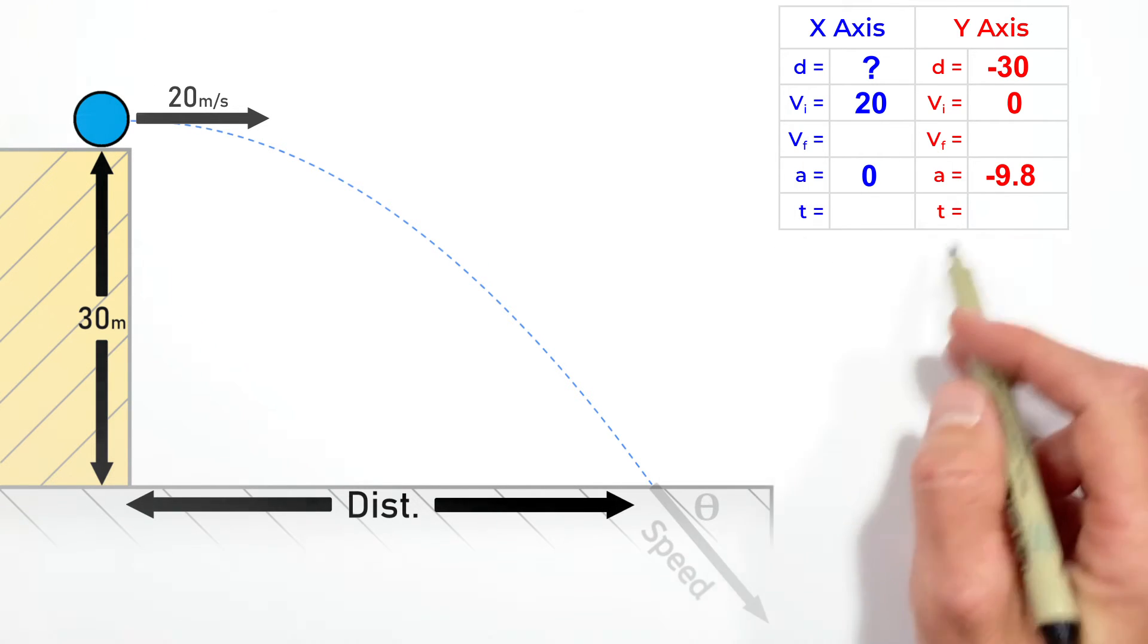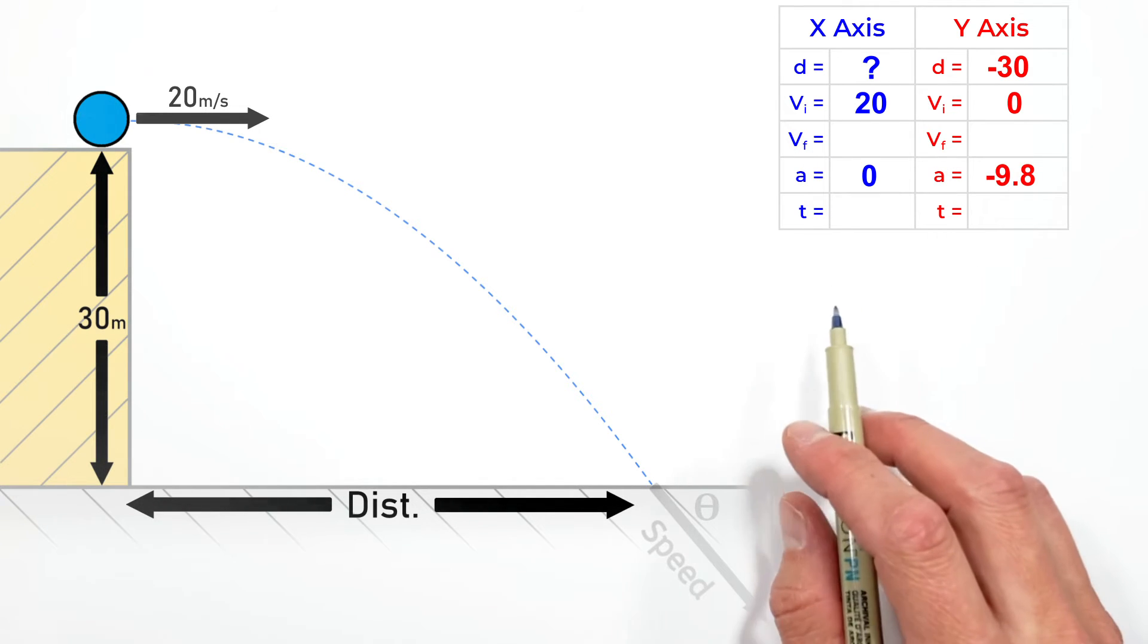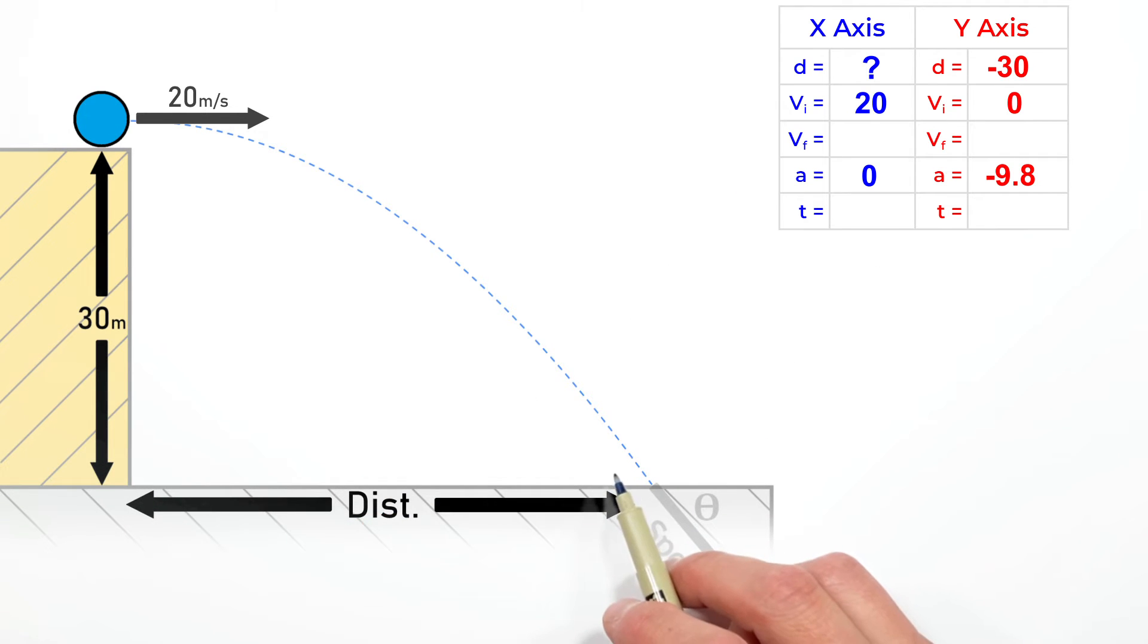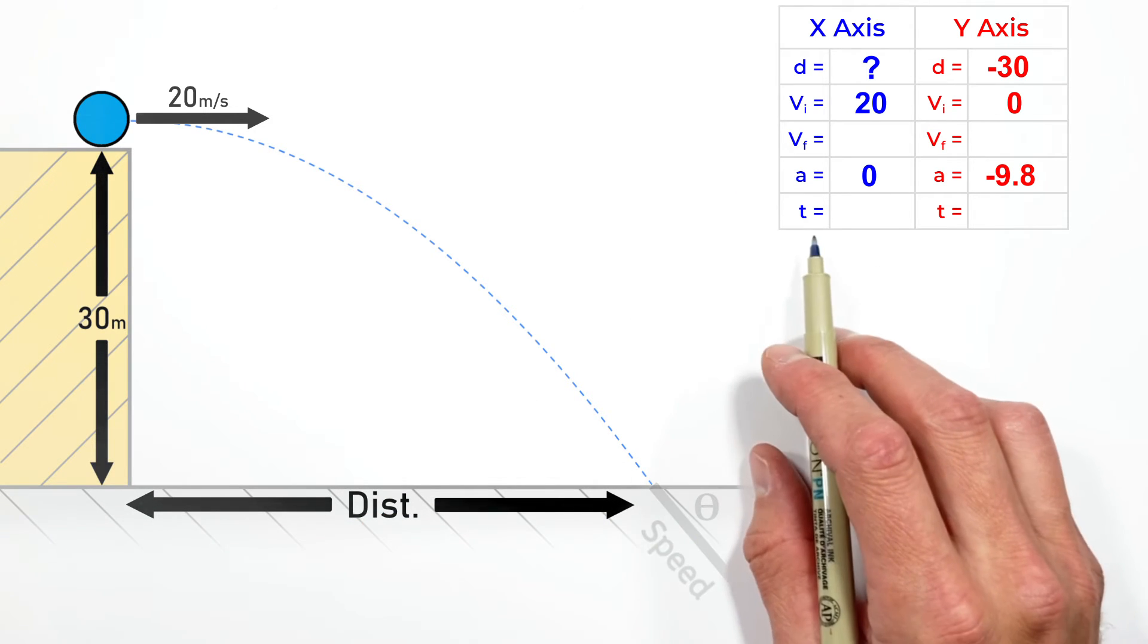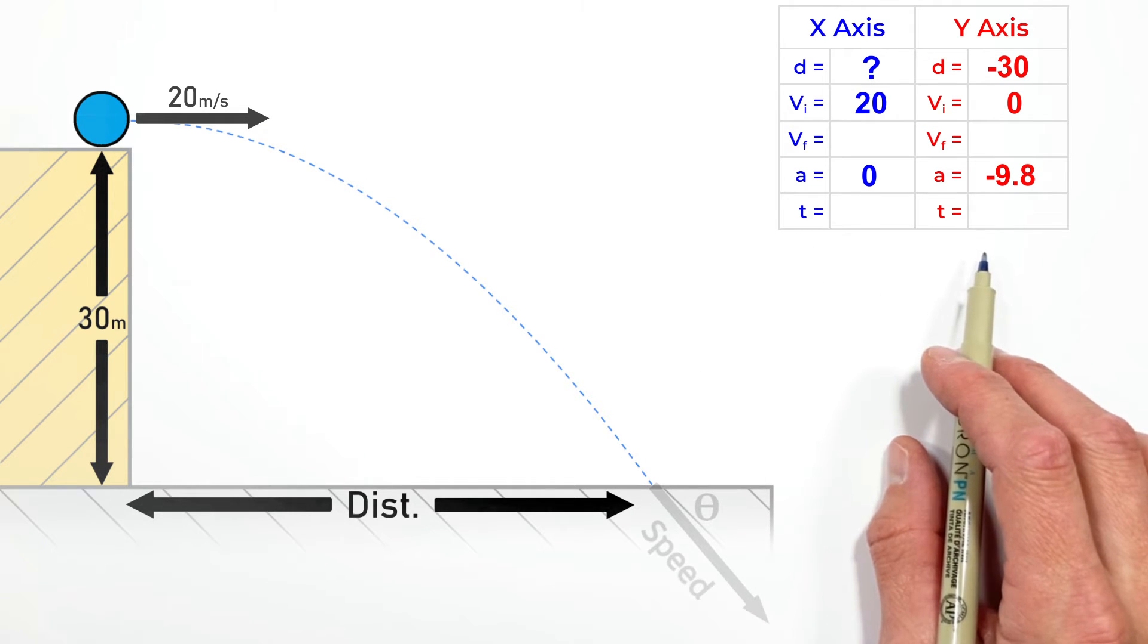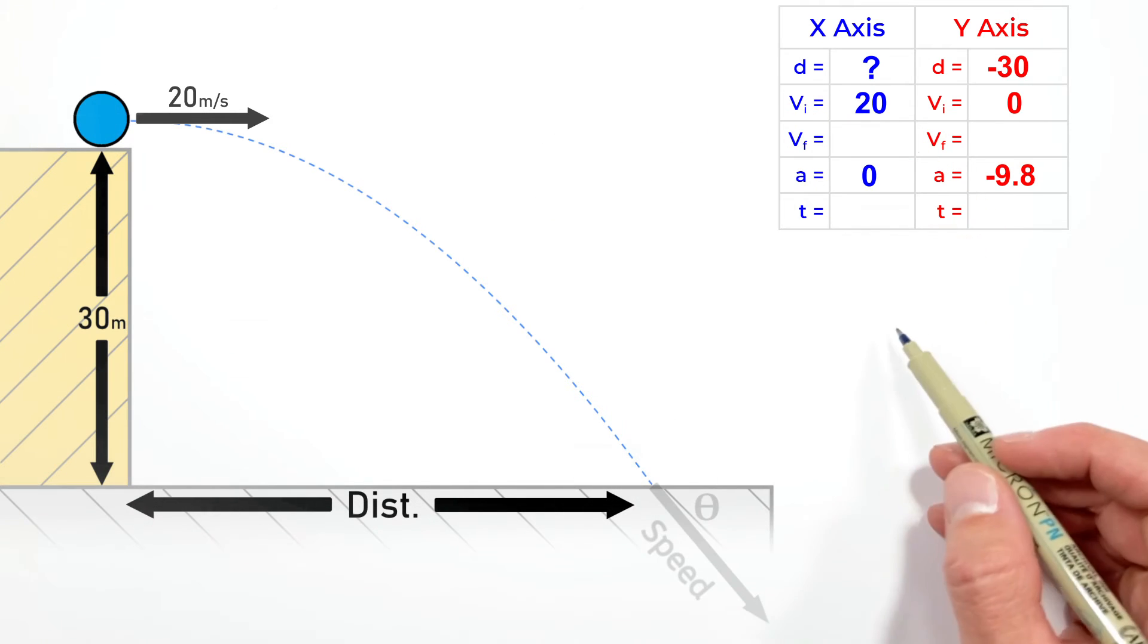With what we've set up, as long as we know any three variables in either column, we can solve for the other two. If we're trying to solve for the horizontal displacement, we don't have enough information in the x-axis, but looking at the y-axis, we can solve for the time it takes the ball to move vertically 30 meters.